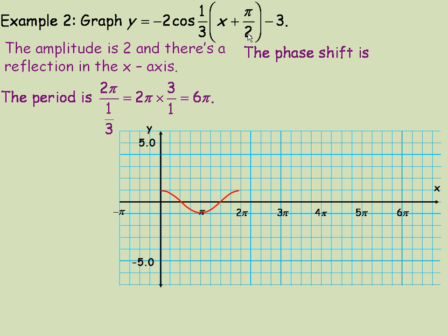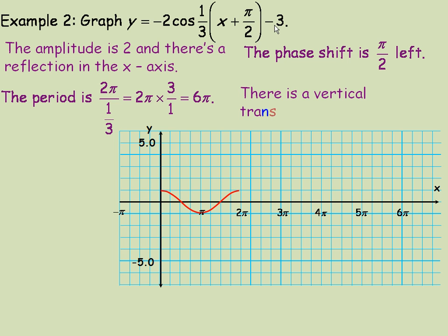The π/2 value is the phase shift, and it goes to the left. Since it says x plus π/2, we think of that as x minus (−π/2), meaning it shifts to the left. The minus 3 at the end means a vertical translation of 3 units down, so the axis through the middle of the graph is shifted down 3 units.